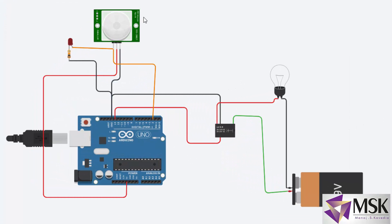The ground of the PIR sensor is connected to ground. VCC is connected to VCC. The output of the PIR sensor is connected to pin number 2. Just for detecting whether the sensor is working properly or not, an LED is also connected — the LED will turn on when some warm body is detected, and it will turn off after some time. A relay is also interfaced here.